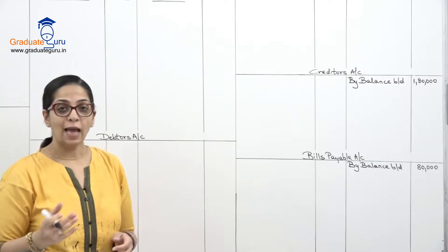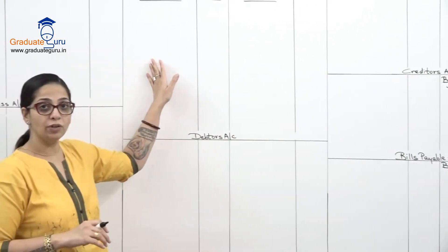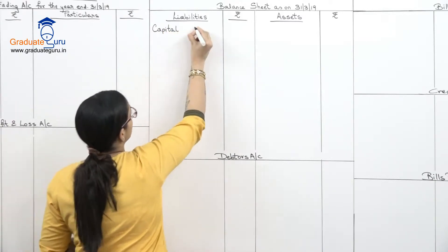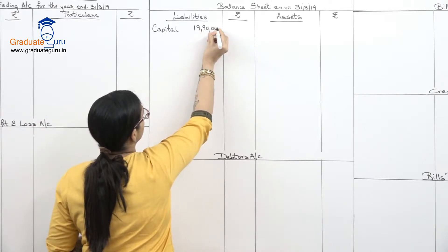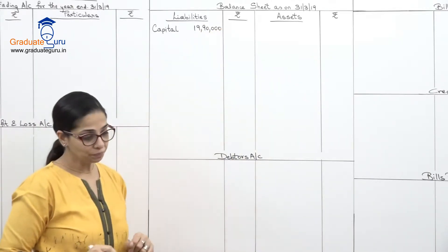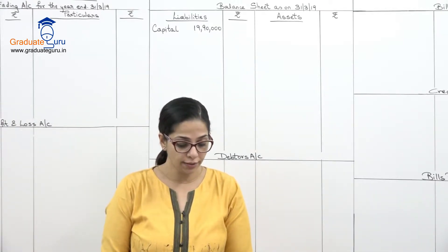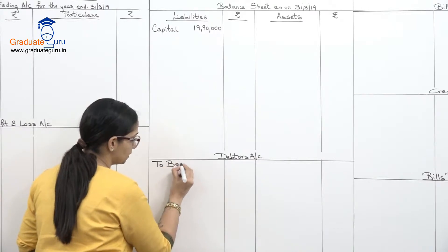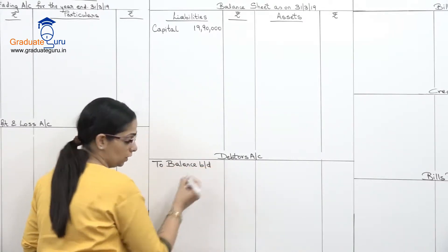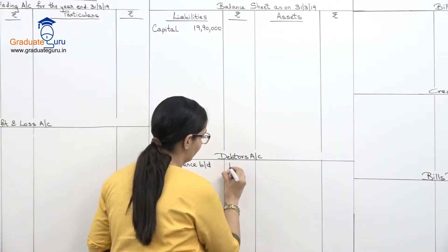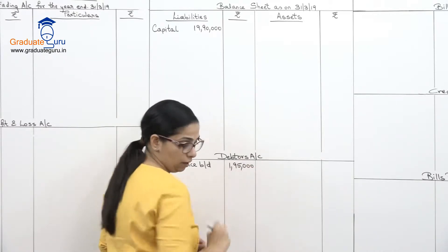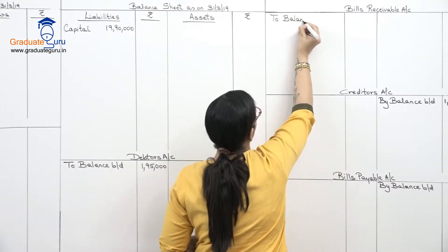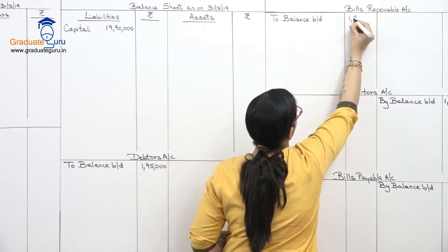For capital, we don't prepare a separate account — I'll write it directly in the closing balance sheet as opening balance: nineteen lakh ninety thousand, leaving space for plus/minus adjustments. Coming to the asset side: debtors opening balance on the debit side is one lakh ninety five thousand. Bills receivable — balance brought down on the debit side — one lakh twenty five thousand.